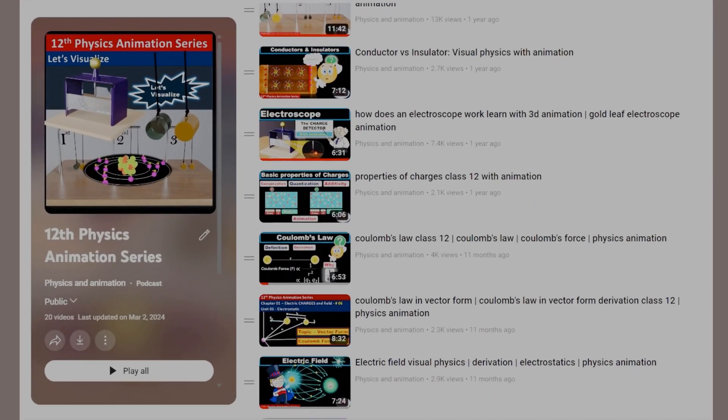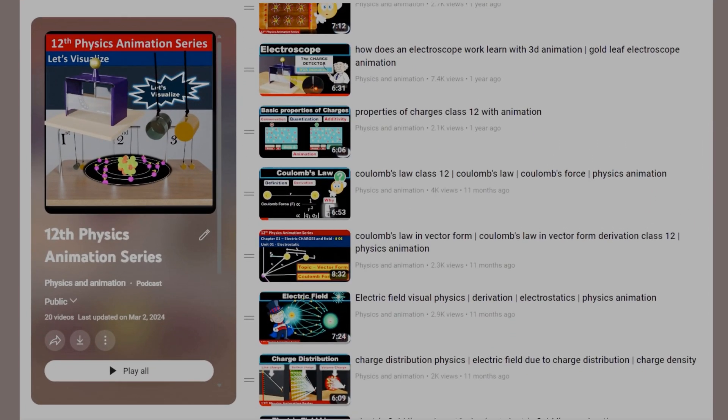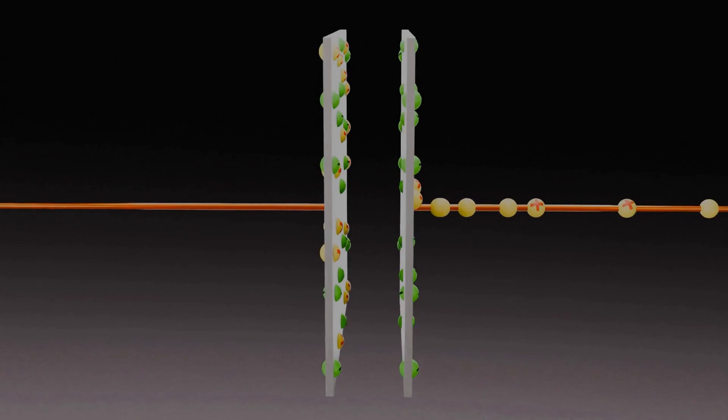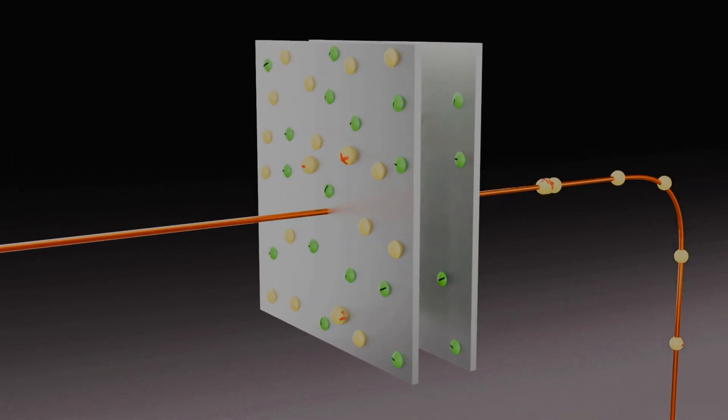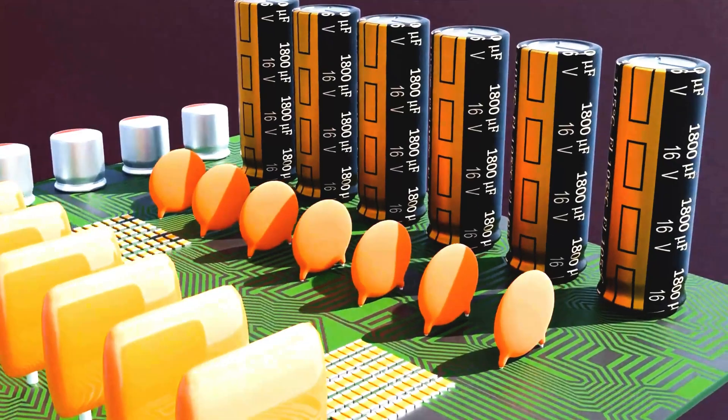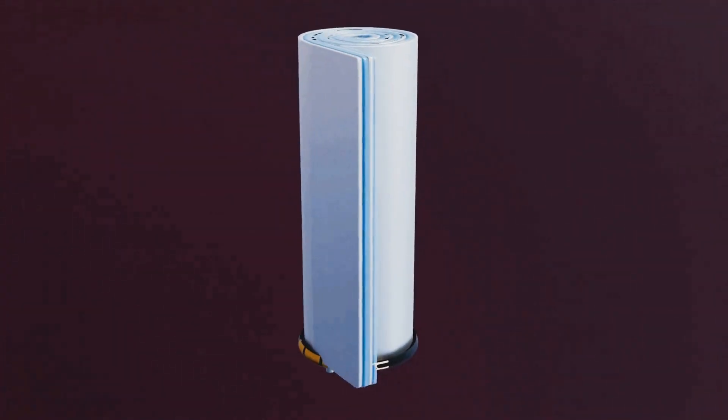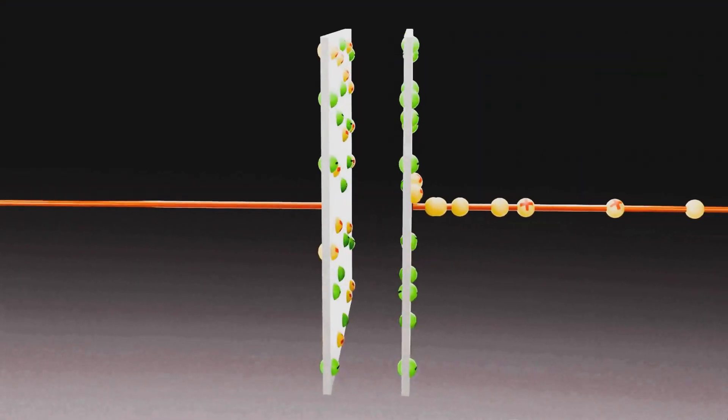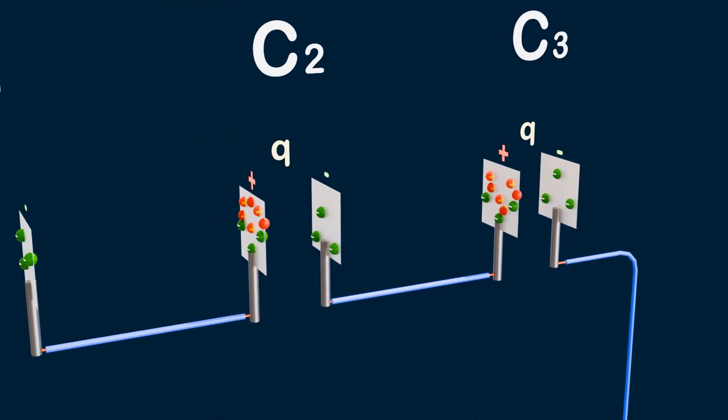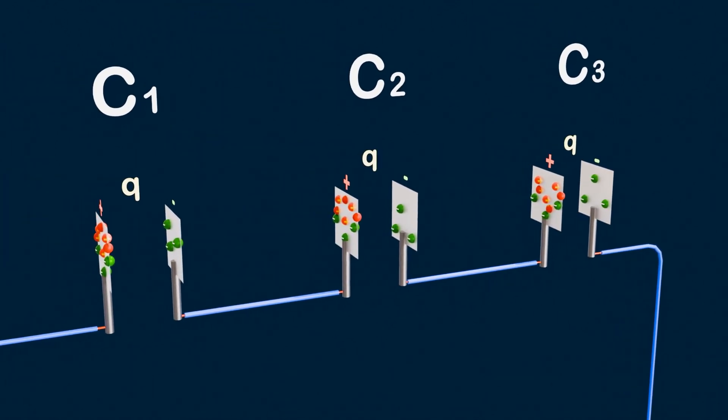Welcome to our 12th Physics Animation Series. In previous videos, we explored how capacitors work and their capacitance equation. But in real circuits, a single capacitor isn't enough. Devices use capacitor combinations to store more charge or handle higher voltages. Let's understand how these combinations work and why they're so important.